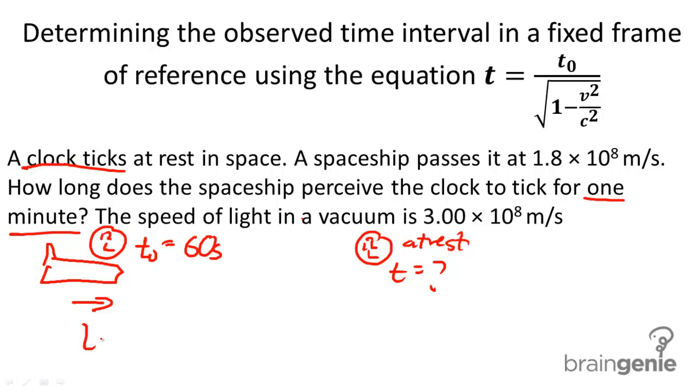So we're going to use the equation stated above. T equals T sub zero over the square root of 1 minus V squared over C squared. And when we go ahead and plug in our values, we get T sub zero of 60 seconds divided by 1 minus